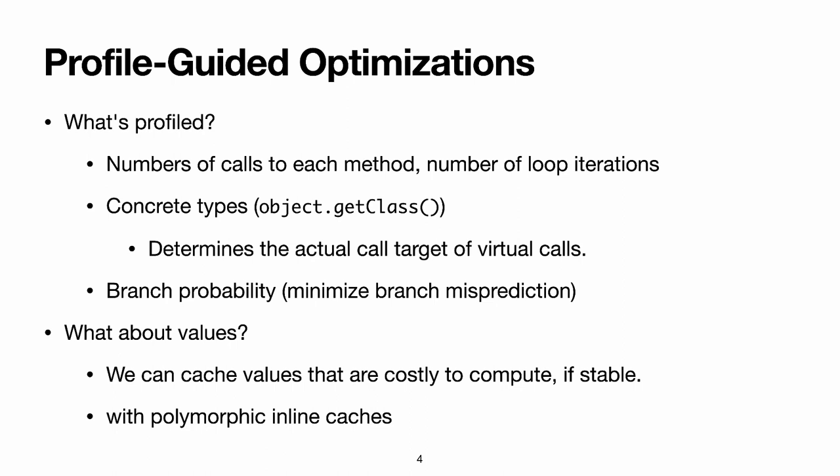Another thing that is commonly profiled and is particularly important in object-oriented languages is the concrete type of object, so what you get from object.getClass() in Java, as opposed to the declared static type. In Java, once you have the concrete type, that fully determines the actual call target, so the actual method implementation for virtual calls. Another thing that can be profiled is the probability that each branch of a conditional gets taken, and that basically lets you hint the CPU on which branch it should predict.